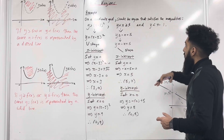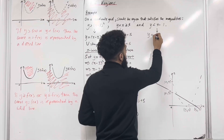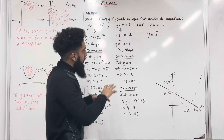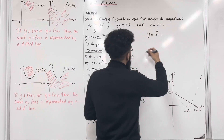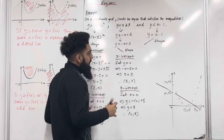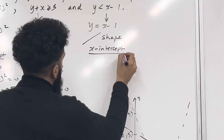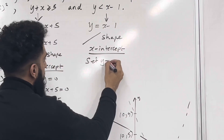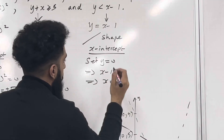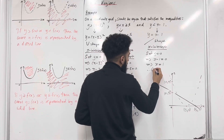Let's move on to the third inequality. y equals x minus 1. The coefficient of x is positive 1, so the shape of this graph will be a straight line. To find the x-intercept, I must set y equal to 0. This implies that x minus 1 equals 0, which implies that x is equal to 1. So the x-intercept will be 1, 0.